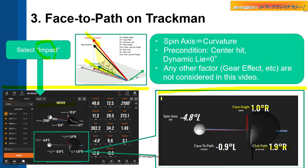The angle between those is the face-to-path, and face-to-path decides spin axis. And spin axis decides curvature.